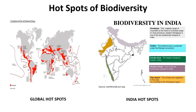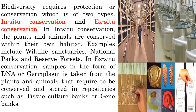Biodiversity needs to be conserved, which brings us to conservation of biodiversity, divided into two types: in-situ and ex-situ conservation. In in-situ conservation, plants and animals are conserved within their own habitat; examples include wildlife sanctuaries, national parks and reserve forests. In ex-situ conservation, samples in the form of DNA or germplasm are taken from plants and animals and stored in repositories such as tissue culture banks or gene banks. Cryo-freezing is one such technique where live biological specimens are stored in liquid nitrogen.